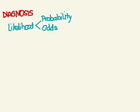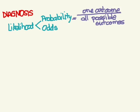Probability is measured in percent, and it's calculated as one outcome you want over all possible outcomes. Odds is a little different.